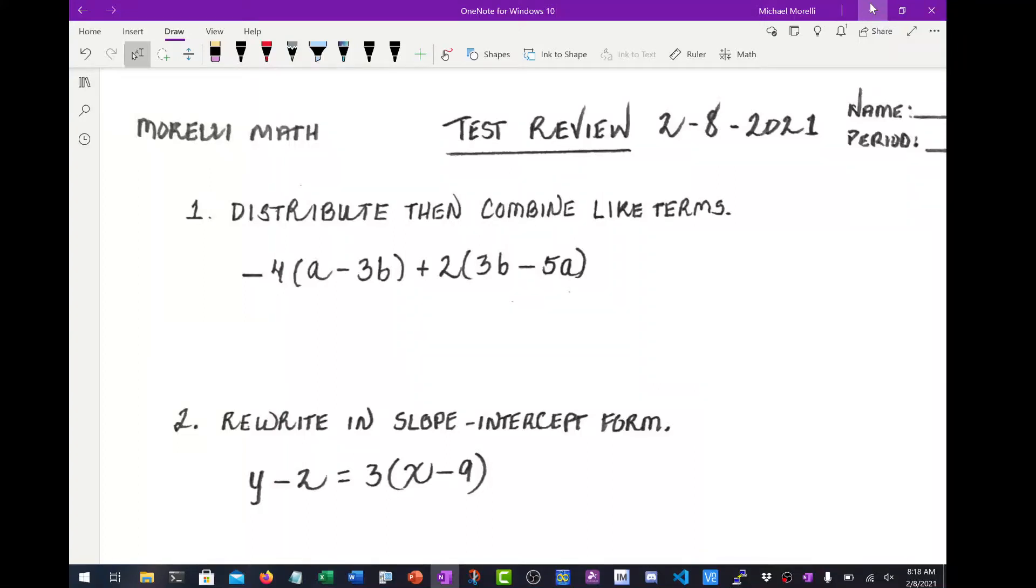Alright, here are the solutions to this test review. The first thing we're asked to do in number one is distribute and then combine like terms. So I like to draw these distribution arrows like this. First thing to do is draw these distribution arrows, and then you know what to do.